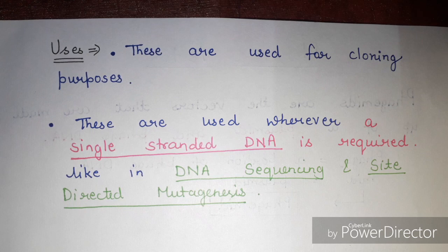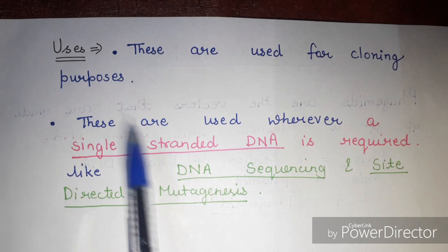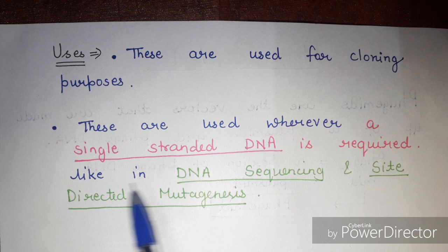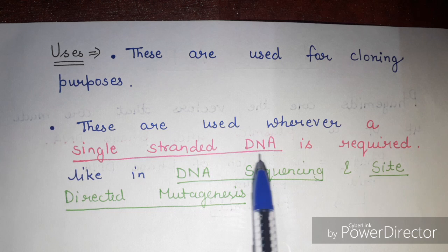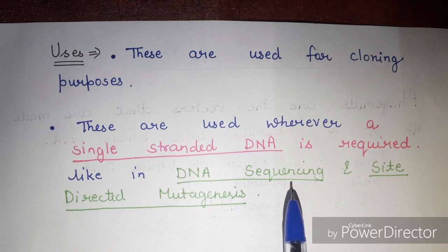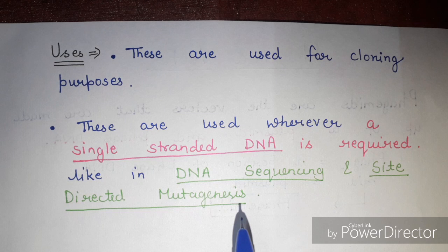The uses of phagemid vectors include their use as cloning vectors and in applications where single-stranded DNA is required, such as DNA sequencing and site-directed mutagenesis. Phagemid vectors are preferred when you need single-stranded DNA for these molecular biology processes.